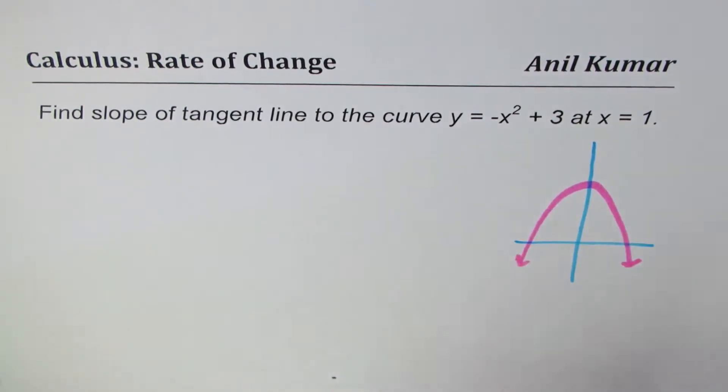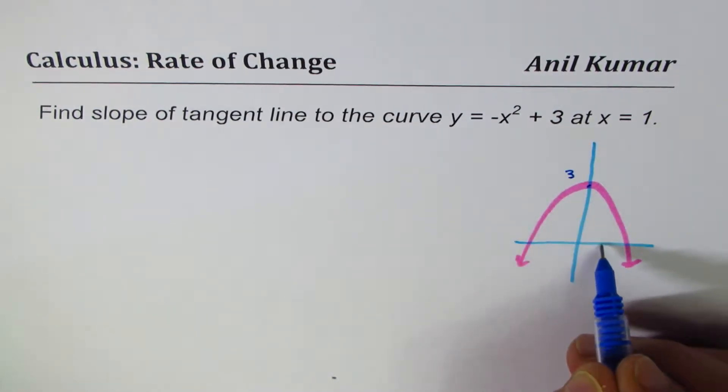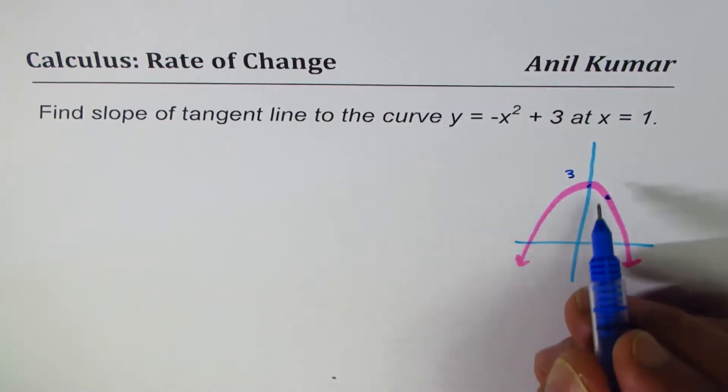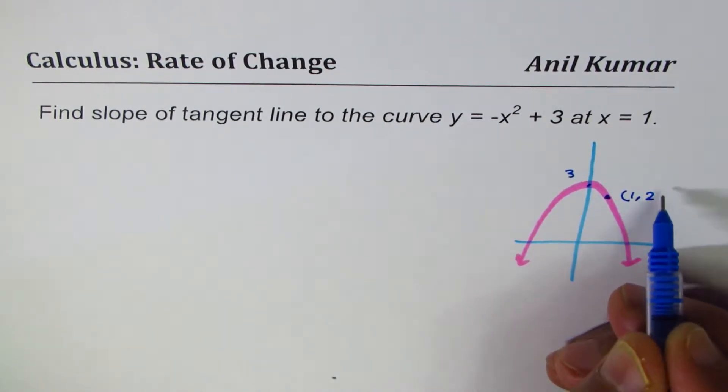So the point here is 3 and at x = 1, that means 1 unit from here, it will go down by one step. So this point will be (1, 2). Perfect.